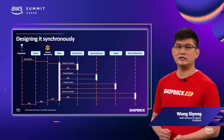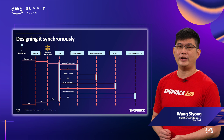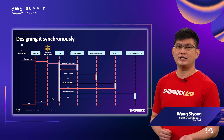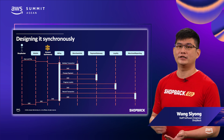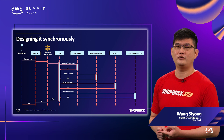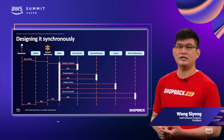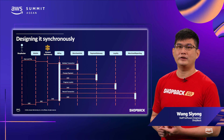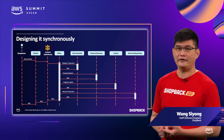If we were to design ShopBack Pay to run synchronously, the ShopBack Pay service would act as an orchestration service to facilitate processing a QR transaction with other internal services. First, it validates the transaction with our merchant information service. Then, it processes the payment with our payment gateway service.